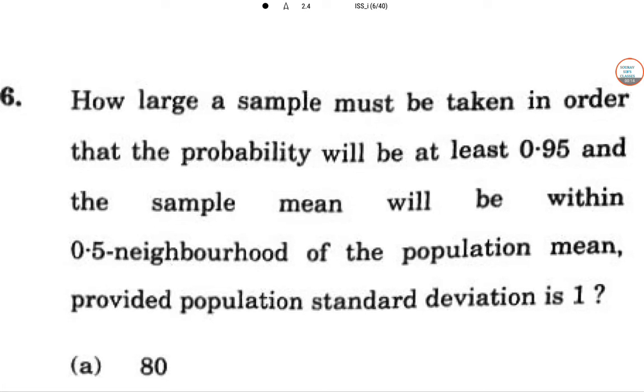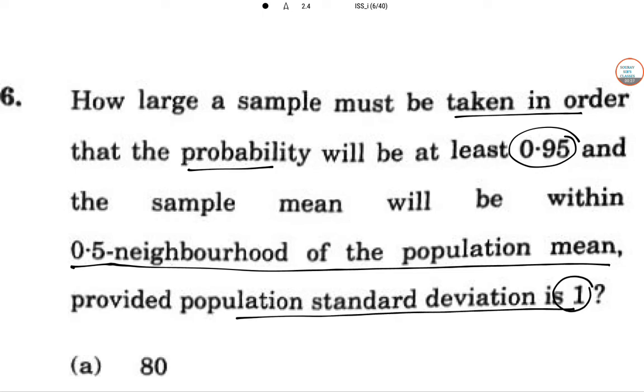So how large a sample must be taken in order that the probability will be at least 0.95, and the sample mean will be within 0.5 neighborhood of the population mean, provided the population standard deviation is 1? Very interesting question. So here we need to find n, and sigma equals 1.